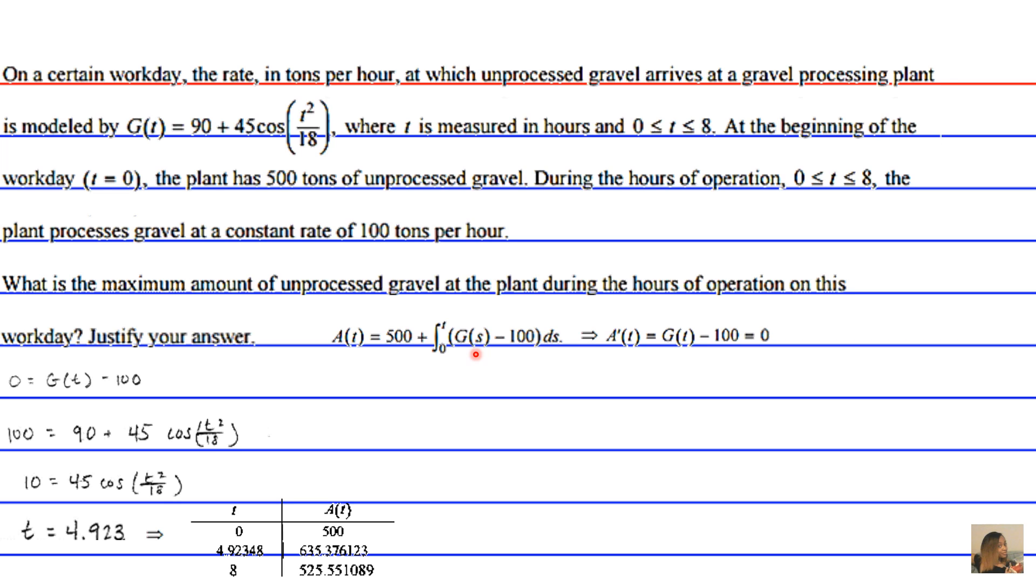So then, if you analyze this in your calculator at t = 8, you get 525, or a little bit more than 525 tons. So definitely, we can see that this is a local maximum.